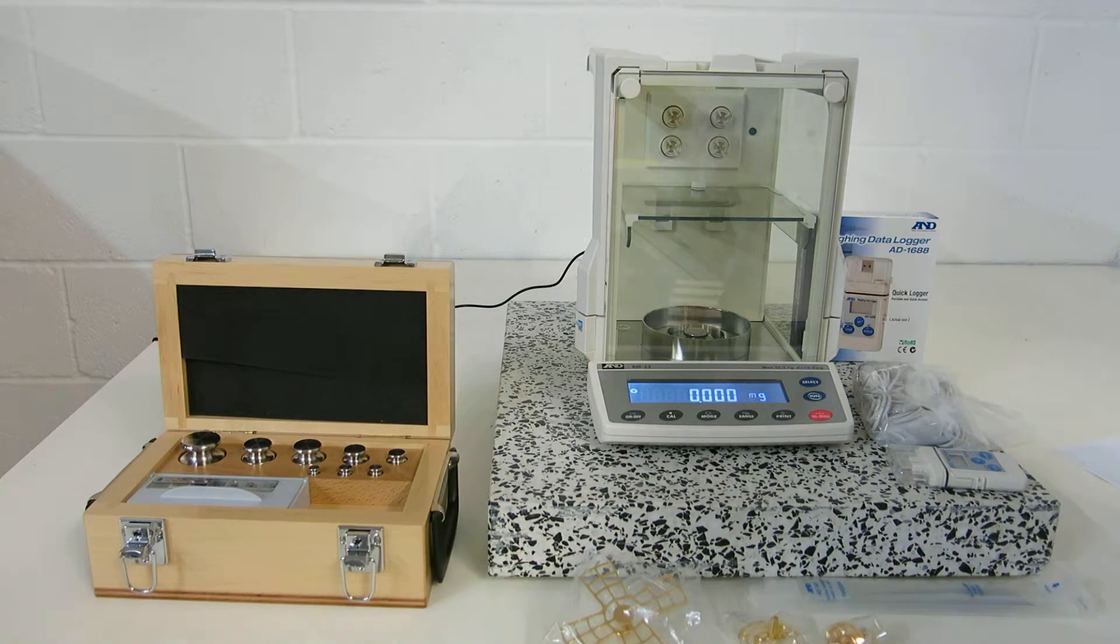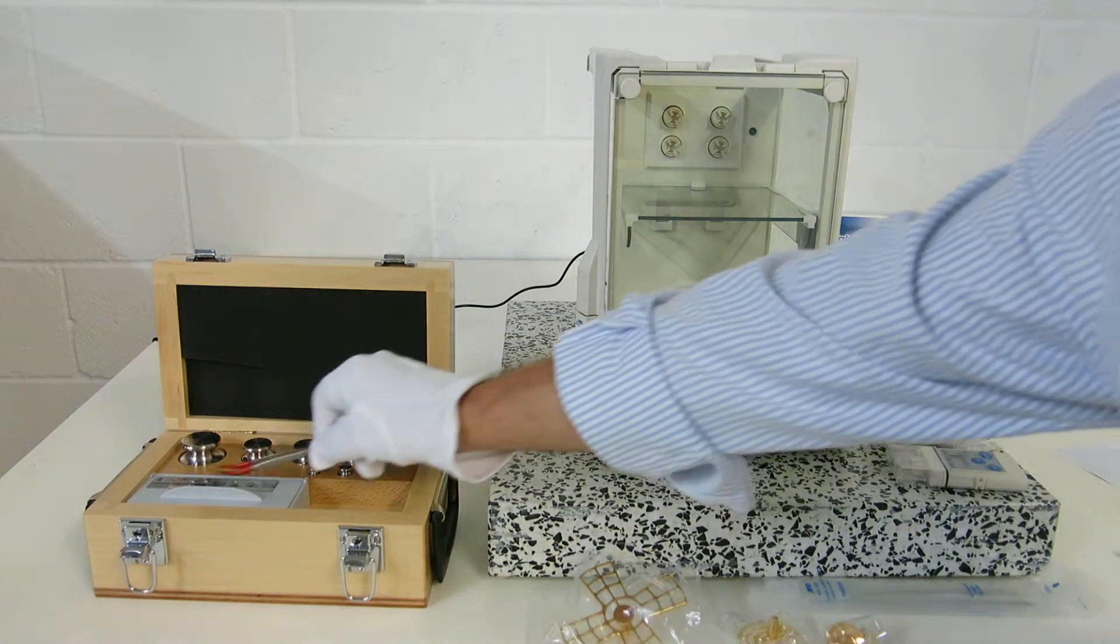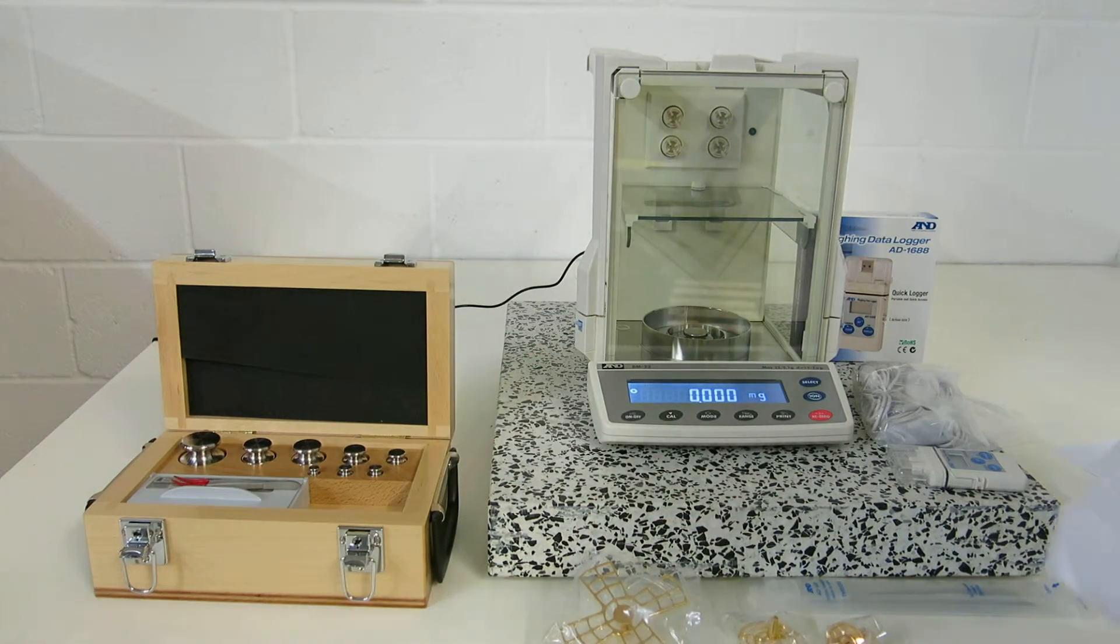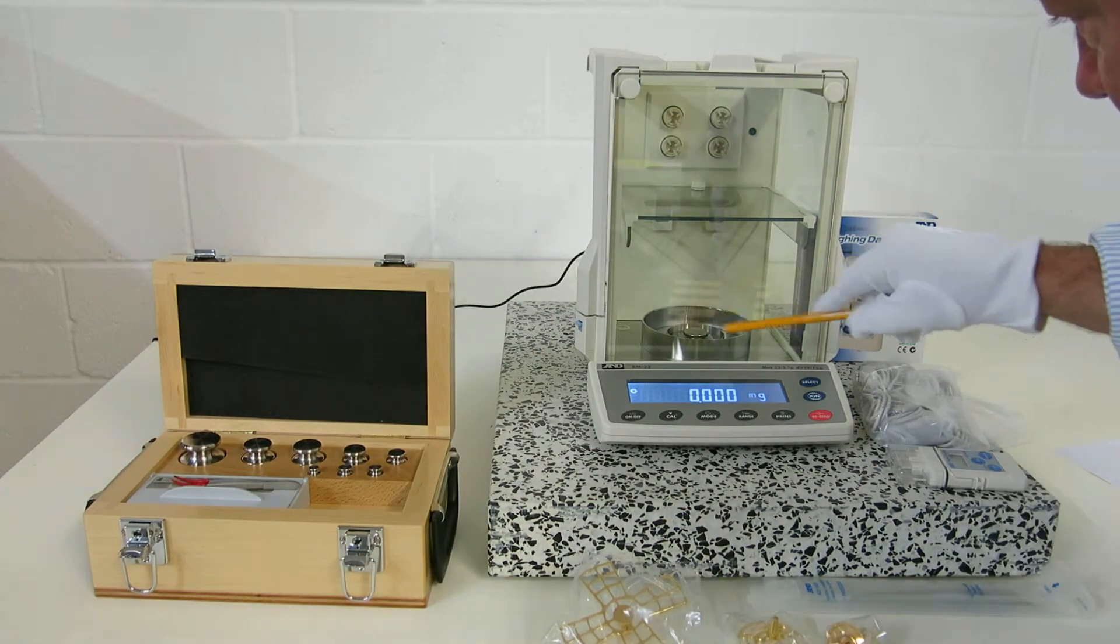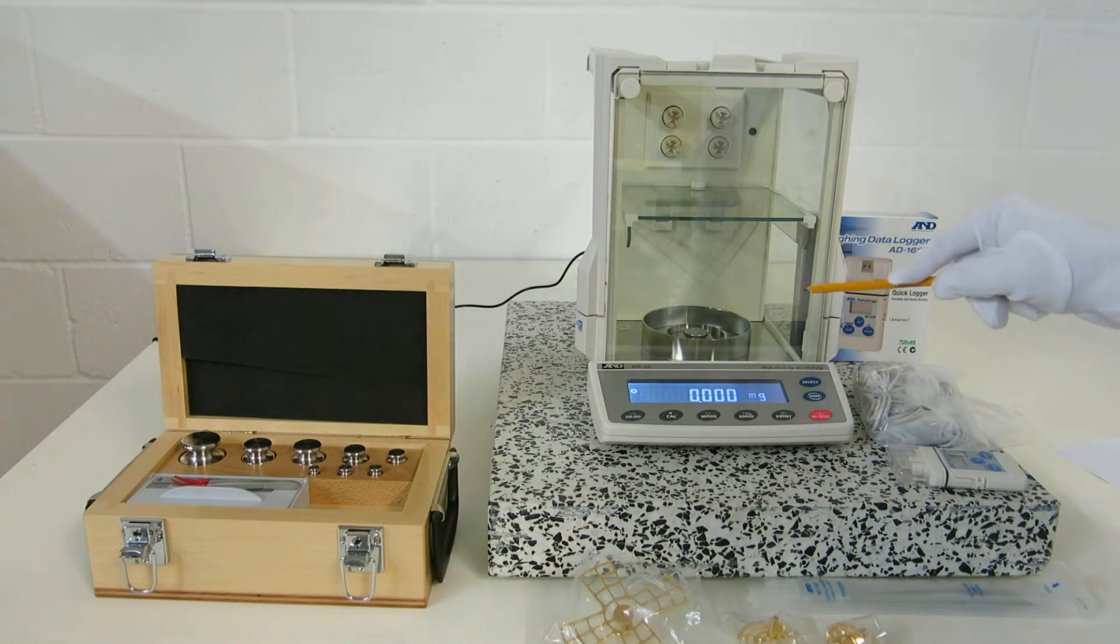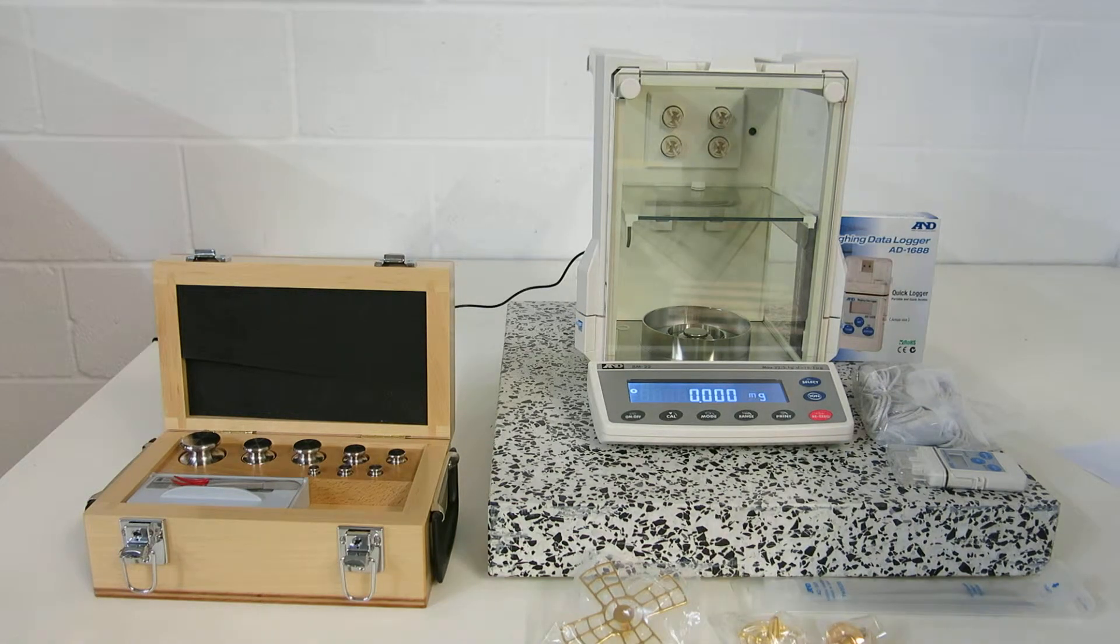As you can see, it's 5 and 6 decimal place. This particular model has this double breeze break facility here, which eliminates drafts, and it's anti-static. It's got a metal coating on it which blocks outside electricity.